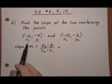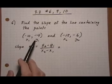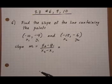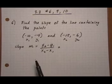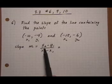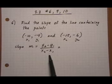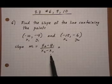So the two points for number 6 are (-10, -4) and (-15, -6). We're going to use the slope formula because we're given the data points, and that'll be y2 minus y1 divided by x2 minus x1 will equal the slope.